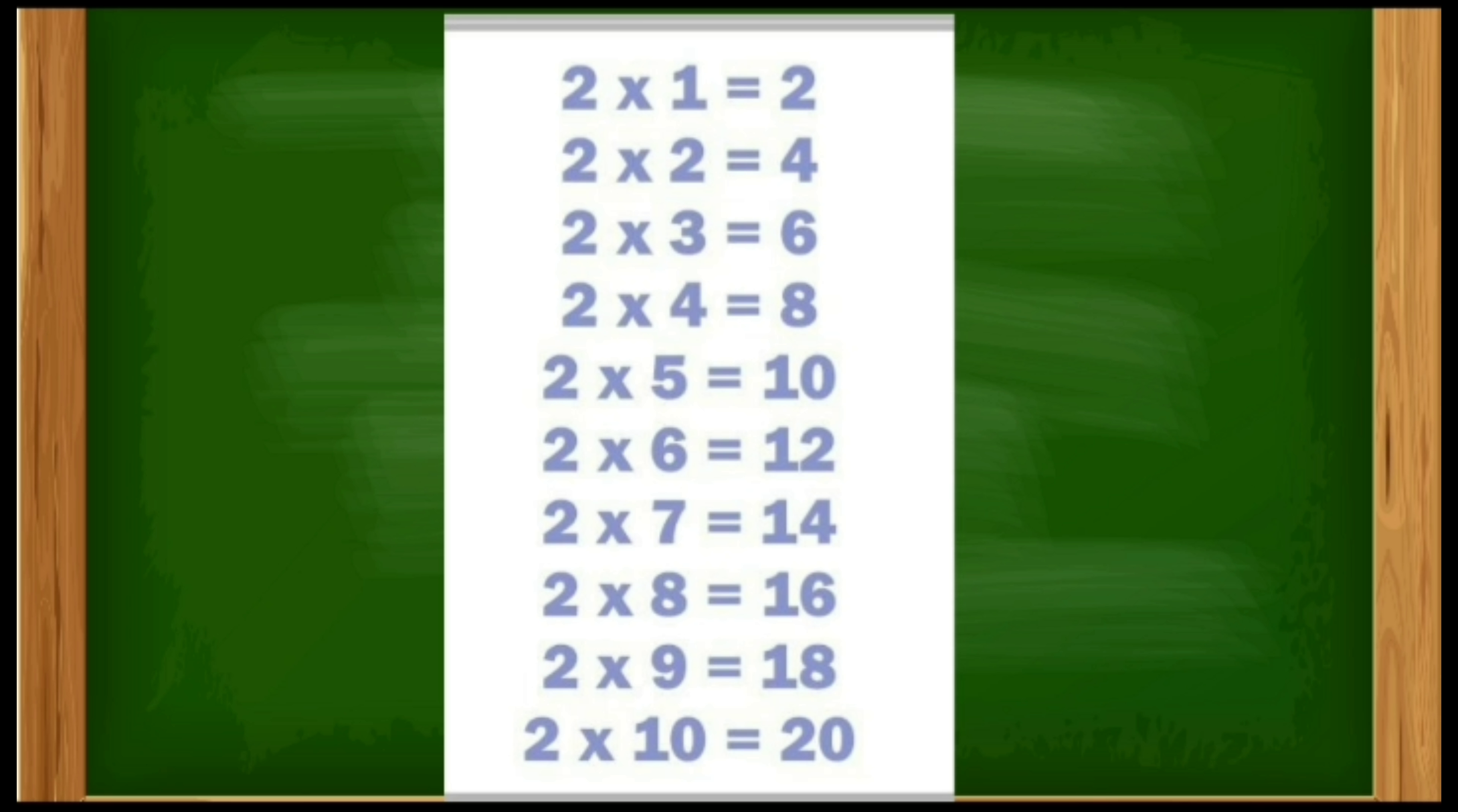So, what we learn in this multiplication table? Each and every output has the difference of two. Like two plus two is four, plus two is six. Yes or no? Two multiplication table means the difference is two.